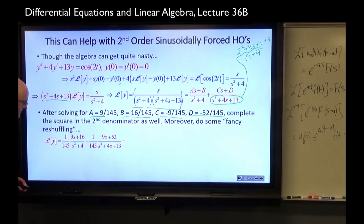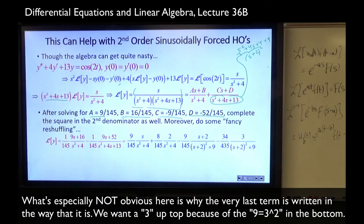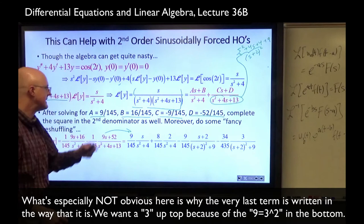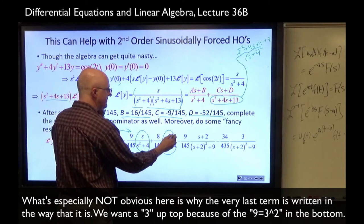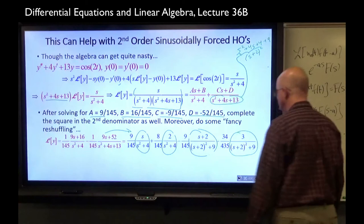We also want to complete the square in the denominator of the second fraction to write it in the form (something)² + something, hinting at the cosine and sine Laplace transforms. Since the coefficient of s is 4, divide by 2 to get 2, square to get 4, and rewrite as s² + 4s + 4 + 9 = (s+2)² + 9. Bringing 1/145 in front and reshuffling, we arrange the fractions into forms where we can use L{cos ωt} and L{sin ωt}.